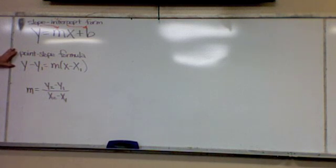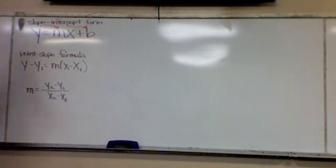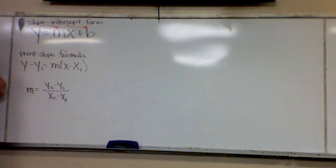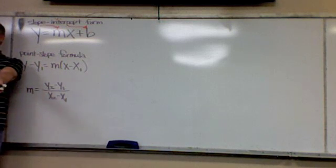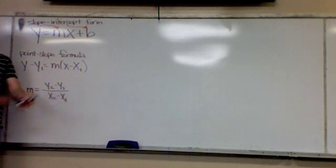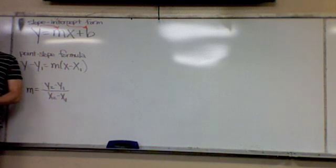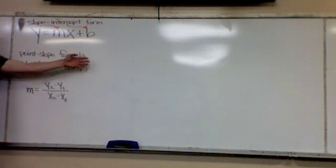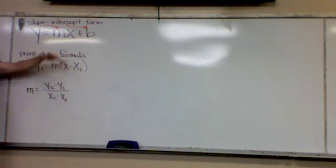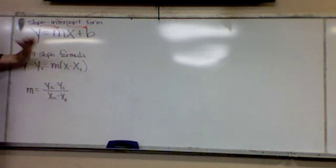This next one is called the Point-Slope Formula. Your book might go a little weird on this, because sometimes — and I know in Algebra 1 they did this, and I found it annoying — they'll ask you to write your equation in point-slope form. But I don't want you to ever think of this as a form. It's a formula. A form is where you finish — either standard form or slope-intercept form. A formula is something you use to get somewhere else. You don't stop there.